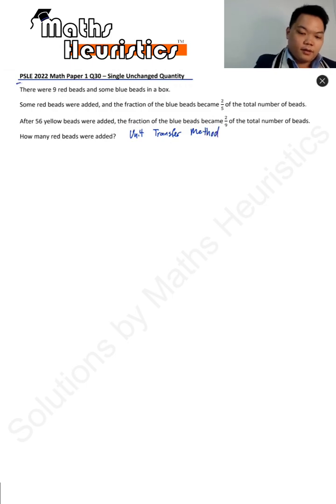Right, let's start. There were 9 red bits and some blue bits in the box. This is your before. Some red bits were added, that's the change. Fraction of blue bits became 2 fifth of the total number of bits. That's your first after.